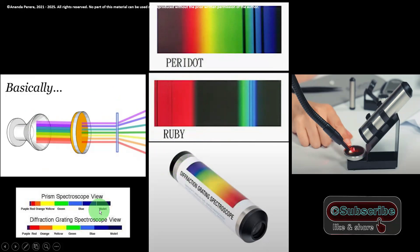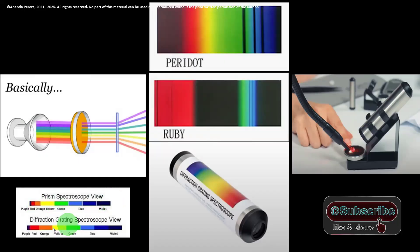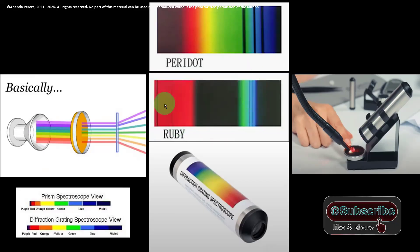A spectroscope is used to analyze gem colors. The prism spectroscope gives a shorter view and the diffraction grating spectroscope gives a longer view — but only a little difference between them. Basically, white light comes through and breaks into colors. When we look through the spectroscope with the gemstone in the light path, we can see the absorption spectra. For peridot, certain absorption lines appear; for ruby, we see black lines in the blue area and in the red area.